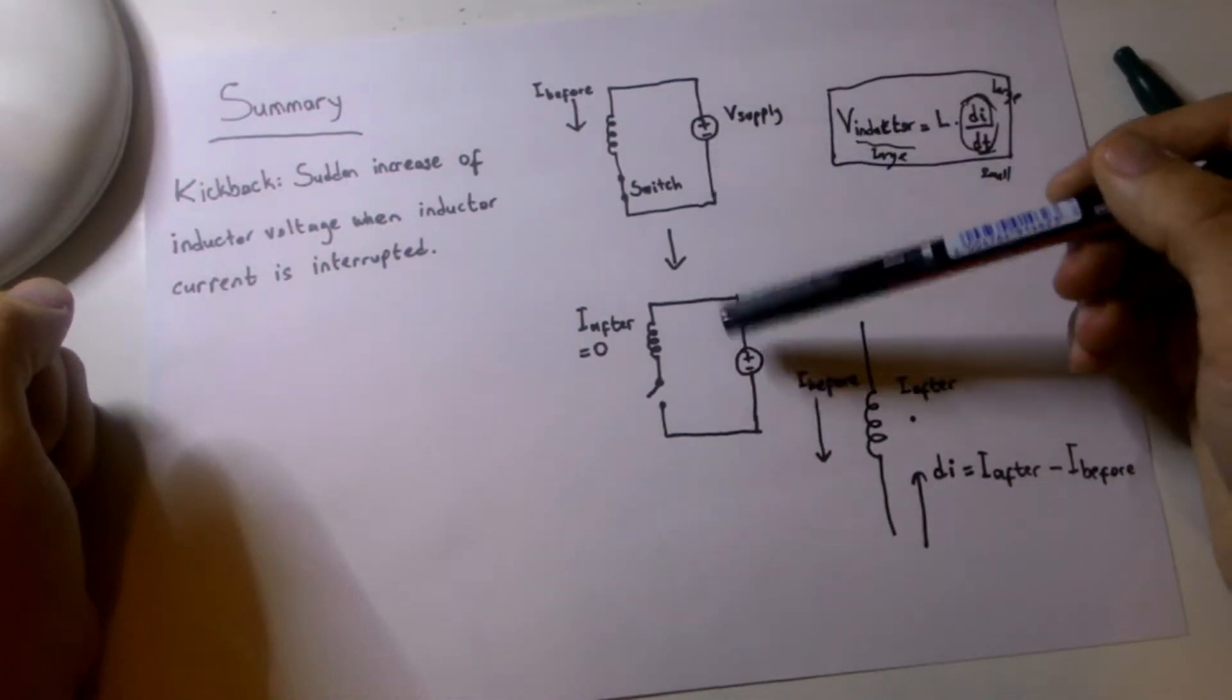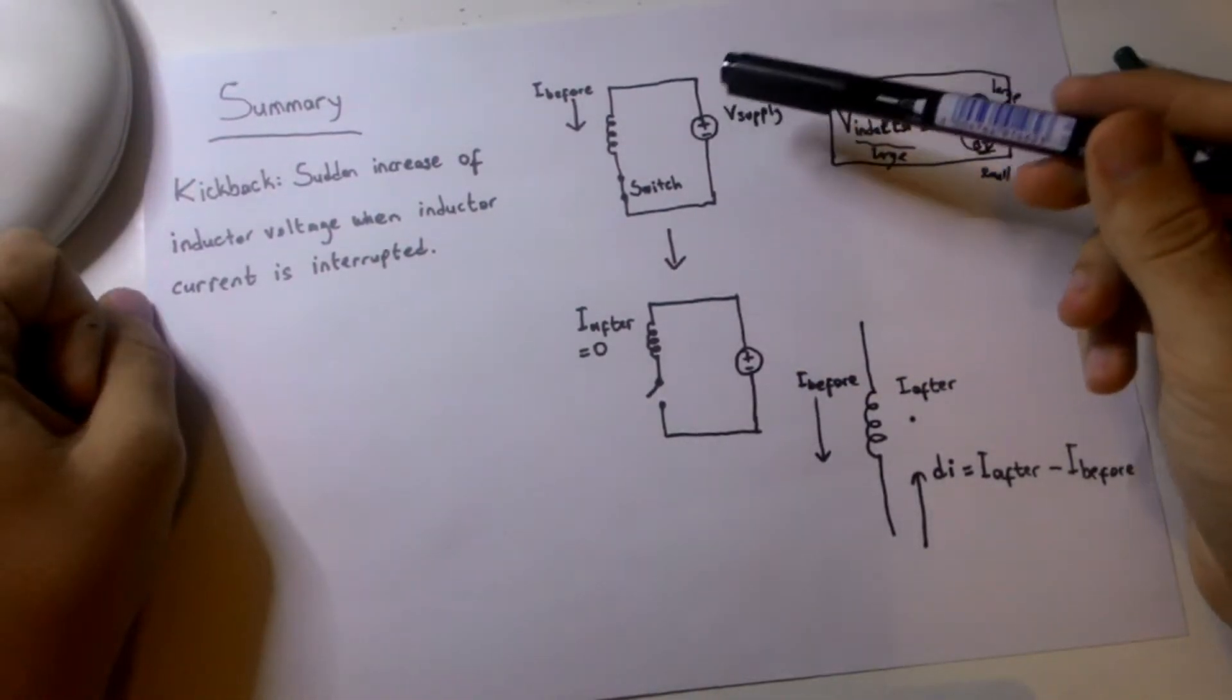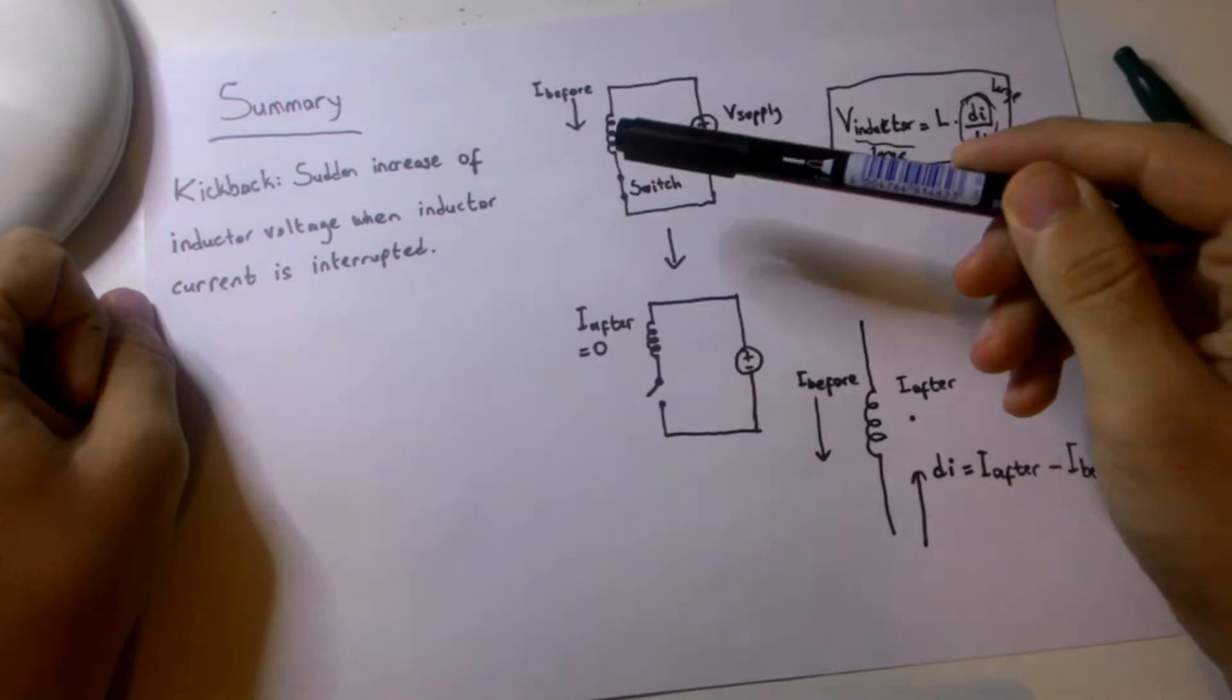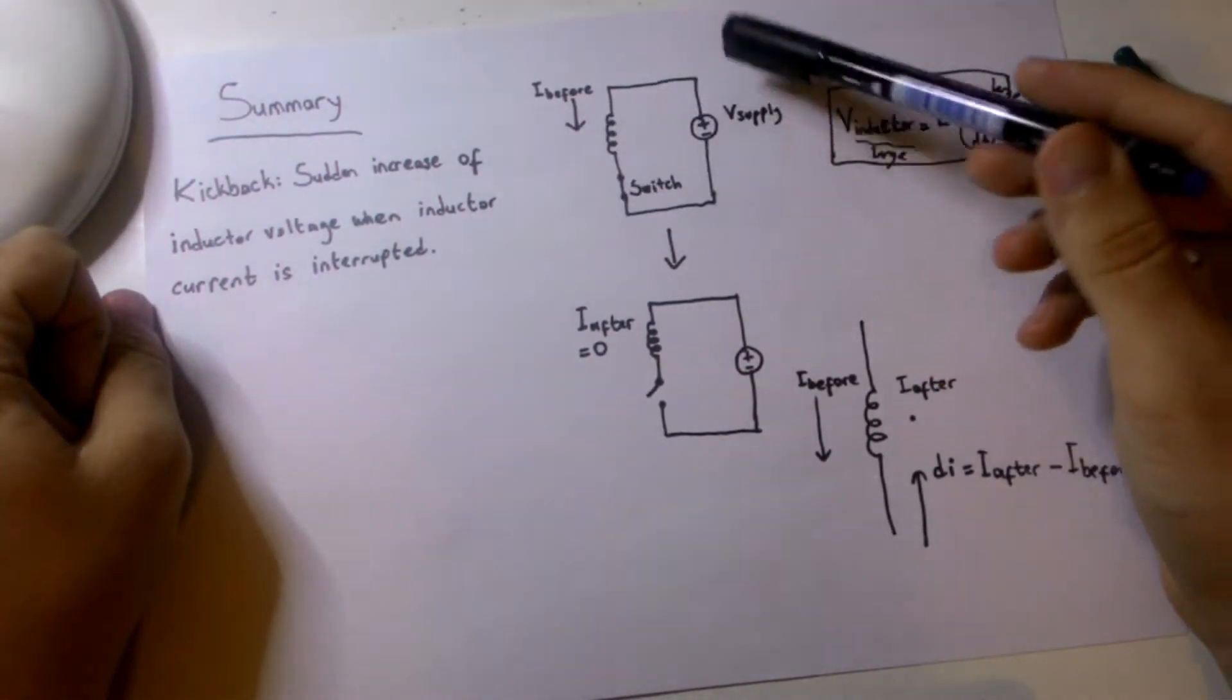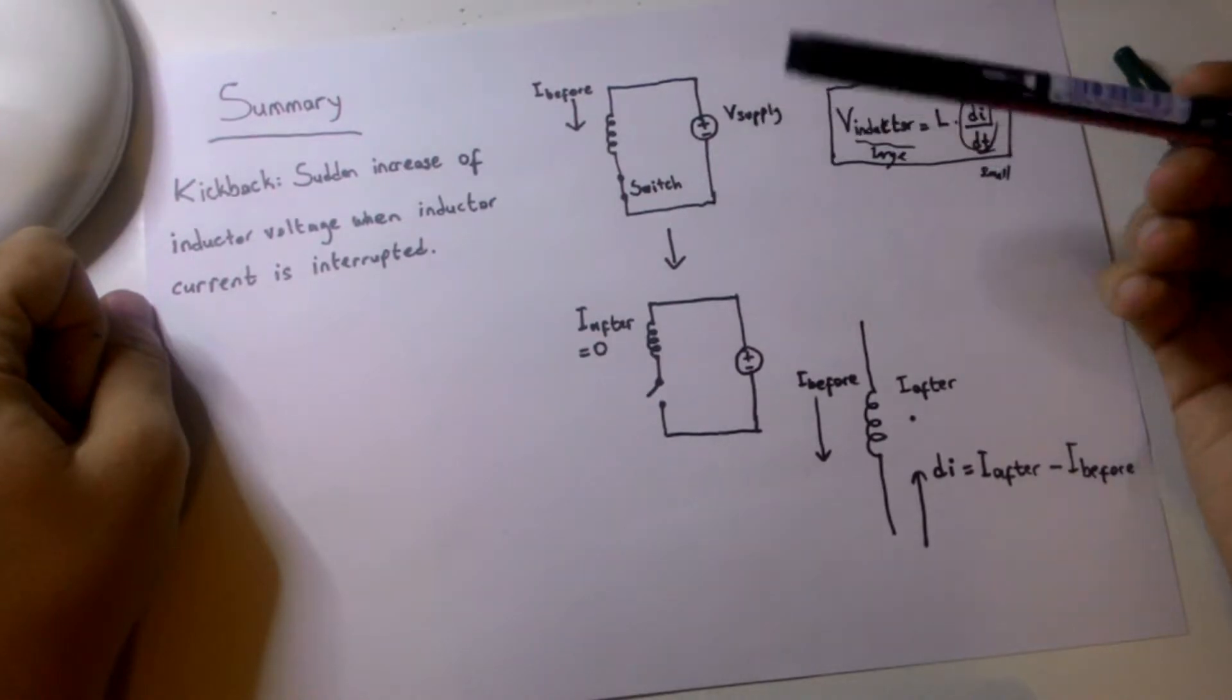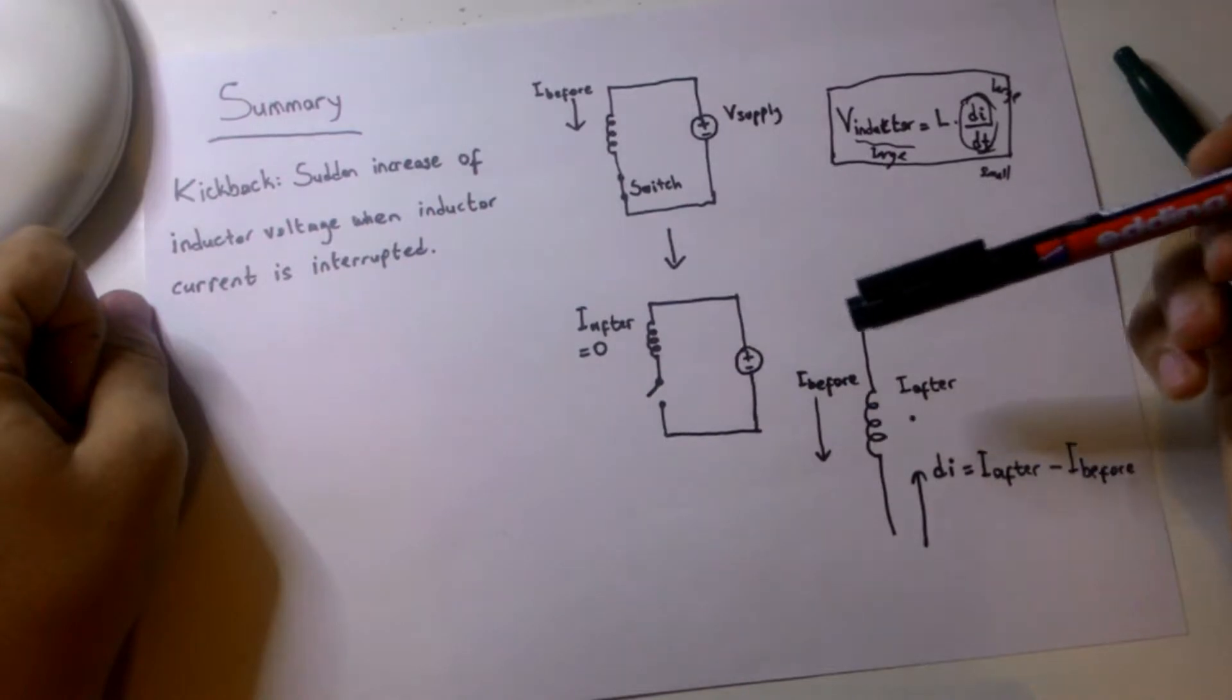Here I have two circuits and in the first circuit I have my power supply, I have my inductor and switch in closed state. In this state the current is just flowing through my circuit happily and there's no problem.